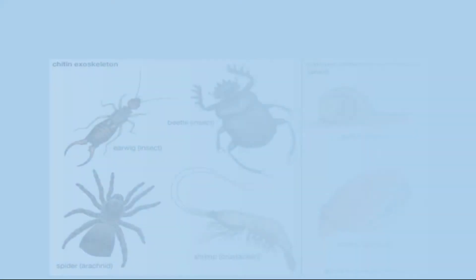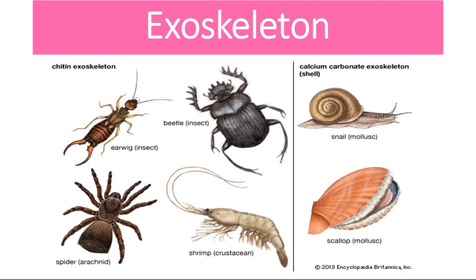In animals there are two types of skeleton. The first type is called an exoskeleton and is found on the outside of the organism's body. This may be a chitin exoskeleton that is seen in many insects, or a calcium carbonate exoskeleton that is seen in many crustaceans.